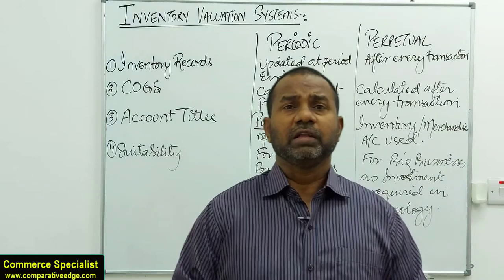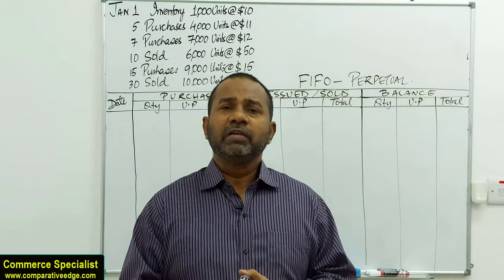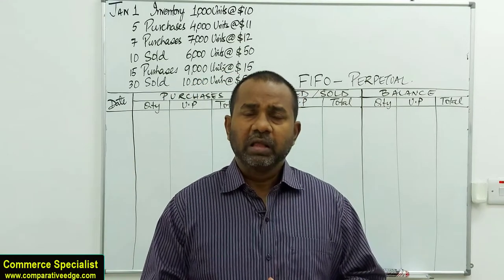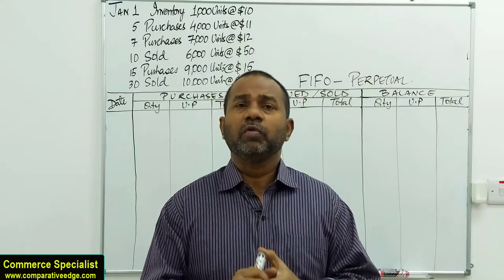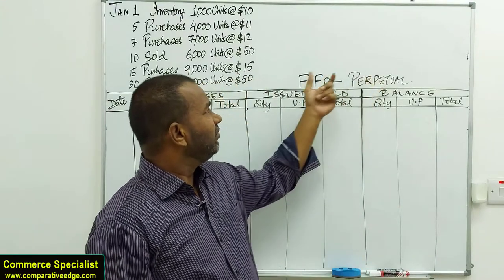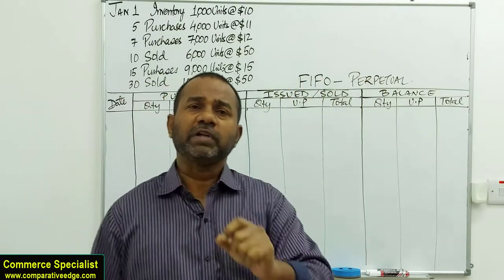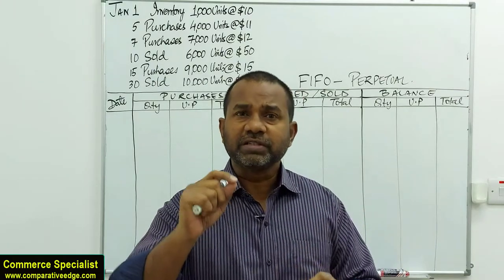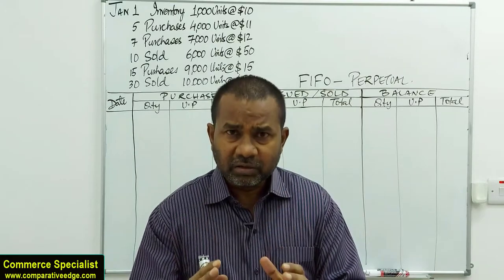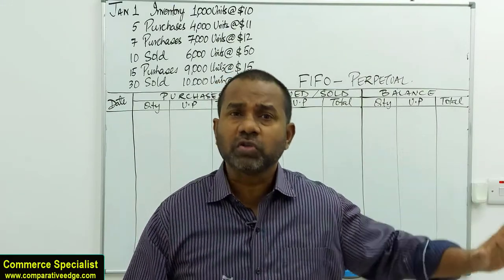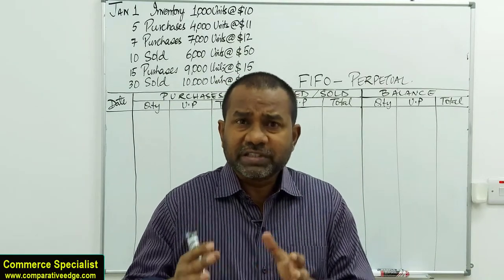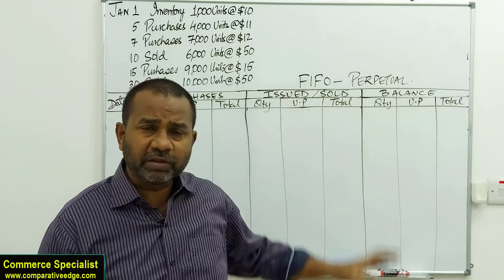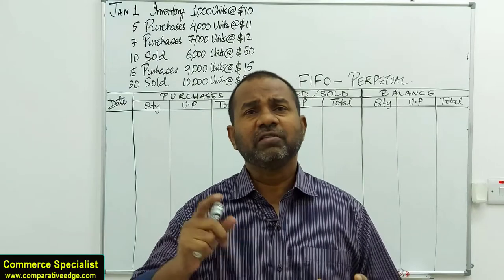Now let's look at the methods. Whether periodic or perpetual, each system has three methods. Under the perpetual system, the first method is FIFO — First In, First Out. The focus of FIFO is that whenever we are selling, our priority is to sell the older stock first and the fresh, recent stock later.